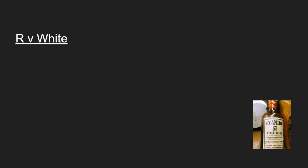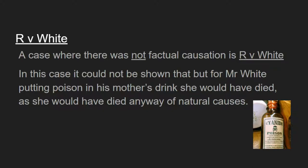In the case of R v White there was no factual causation, because it couldn't be shown that but for Mr White putting poison in his mother's drink she would have died — as she would have died anyway of natural causes. His mother had a heart attack before she could drink the poisoned drink, so she was already going to die and Mr White wasn't a cause in fact of what happened to her. However, he did face charges and was convicted of attempted murder as it was his intention to kill her — he just didn't get the chance as she died beforehand.